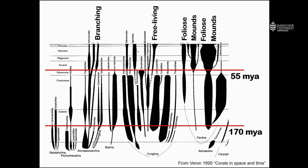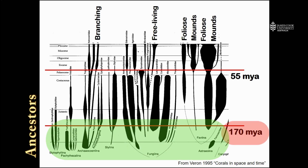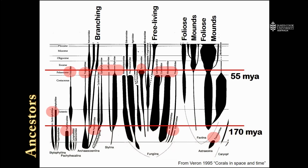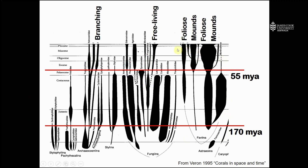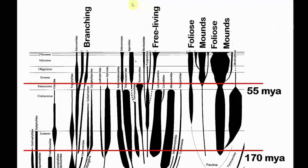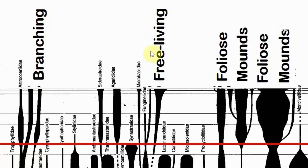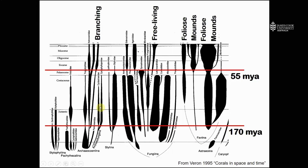We're zooming in now to look at the family tree and the evolutionary history of the stony corals. We can see that the ancestors of stony corals arose about 170 million years ago. Over time, some of those ancestors went extinct during various events in our geological history. And over time, new lineages — new family trees of corals — have arisen. We'll talk more about how to identify corals in later sections, but you can see here the evolutionary history of the major branching corals, free-living or mushroom corals, and foliose and mound-shaped corals. This really is a family tree of the most recent living stony corals and their evolution over a much longer time period.